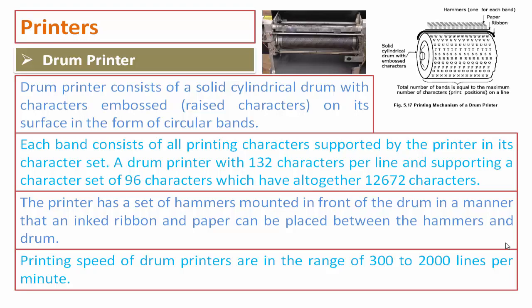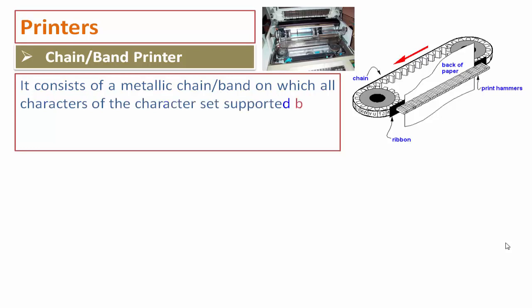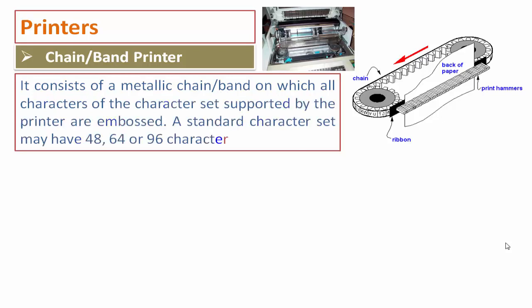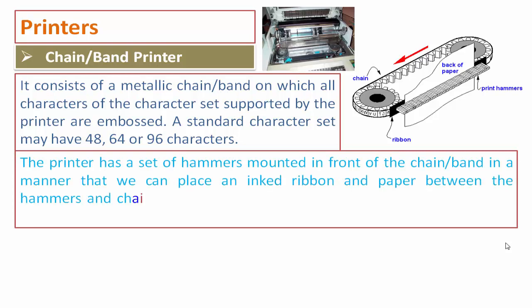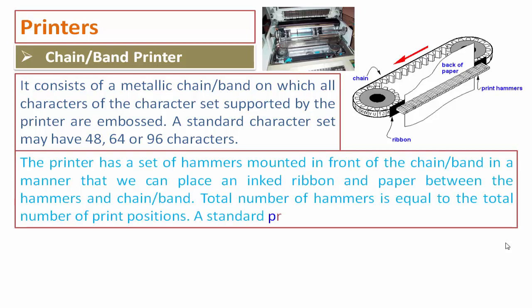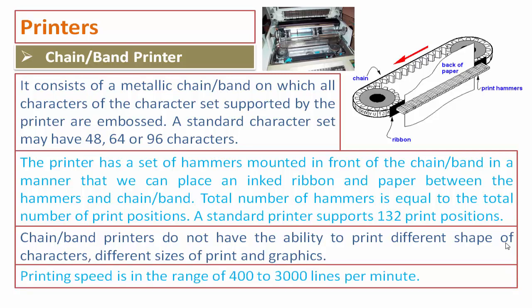A chain printer consists of a metallic chain on which all characters of the character set are embossed. A standard character set may have 48, 64, or 96 characters. The printer has a set of hammers mounted in front of the chain so that an inked ribbon and paper can be placed between the hammers and chain. The total number of hammers equals the total number of print positions; a standard printer supports 132 print positions. Chain printers cannot print different character shapes, sizes, or graphics. Printing speed ranges from 400 to 3,000 lines per minute.